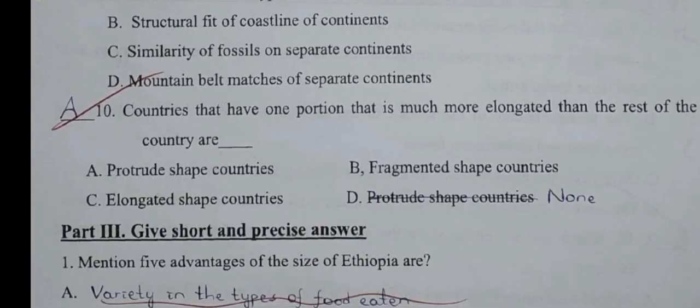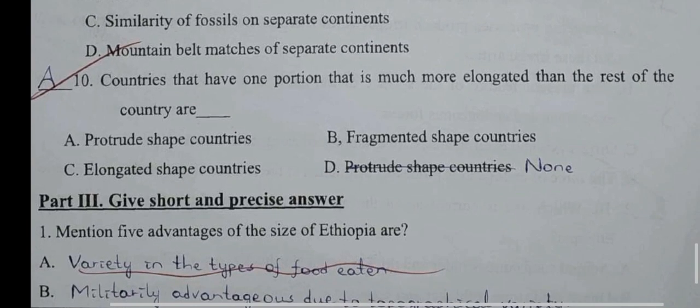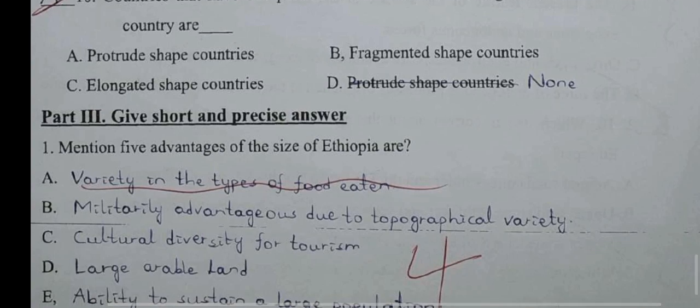Question number ten: Countries that have one portion that is much more elongated than the rest of the country are called: A: Protrude shape country. B: Fragment shape country. C: Elongated shape country. D: None. The correct answer is A: Protrude shape country.